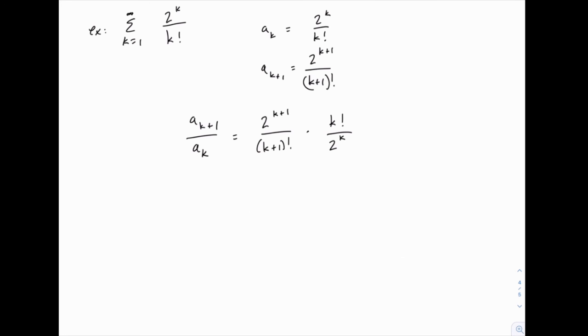Now notice what happens. We have powers of 2 first of all. If you start canceling 2s from the top and the bottom, you're going to wind up canceling all of the 2s in the denominator and you'll be left with 1 2 in the numerator.